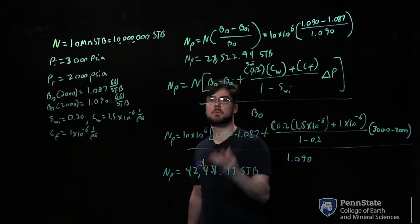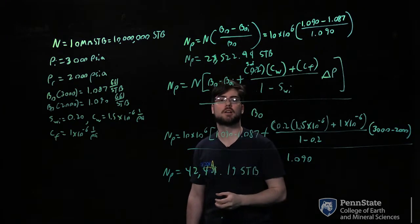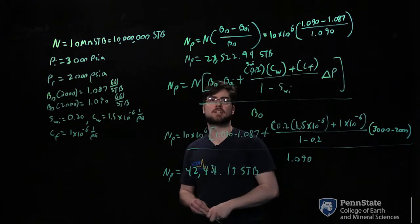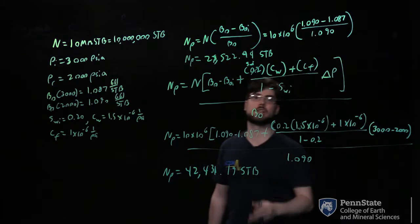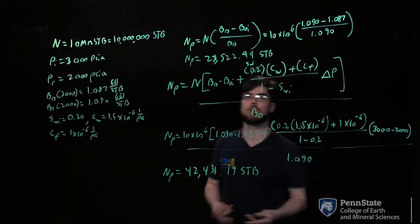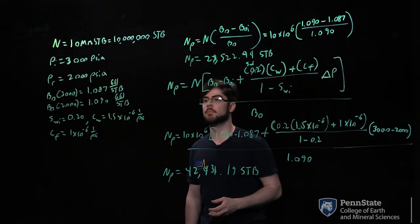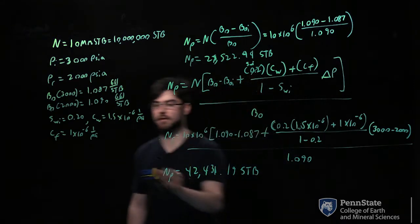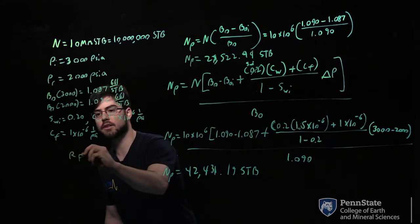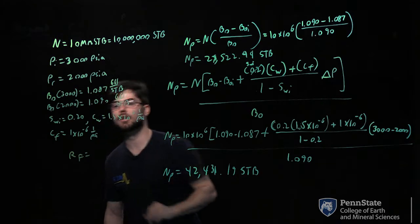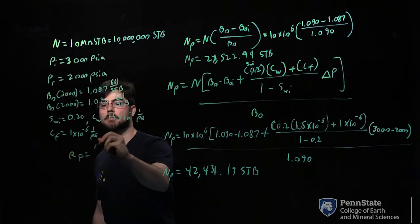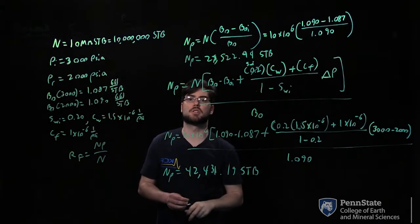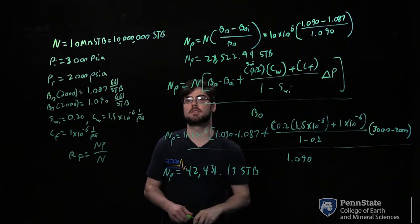From these cumulative oil productions, we can also find what our recovery factors may be. The only drive mechanism considered here is fluid expansion, which is one of the lowest recovery drive mechanisms. Recovery factor is simply NP divided by N — your cumulative oil production divided by your original oil in place at stock tank conditions.